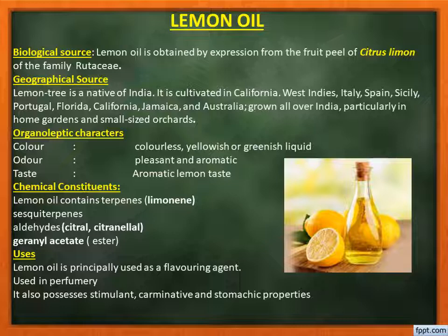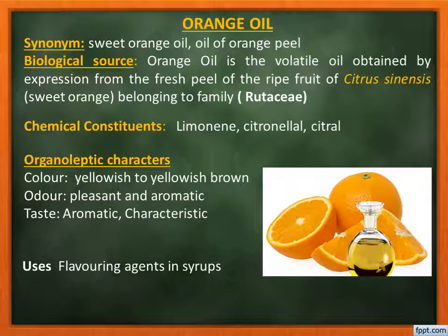Orange oil, synonym: sweet orange oil or oil of orange peel. Biological source: orange oil is the volatile oil obtained by expression from the fresh peel of the ripe fruit of Citrus sinensis, belonging to the family Rutaceae. Chemical constituents include limonene, citronellal, and citral. It has a yellowish to yellowish-brown color, pleasant and aromatic odor, and characteristic taste. It is used as a flavoring agent in many pharmaceutical formulations, especially in the preparation of syrups.